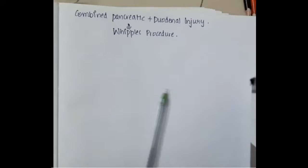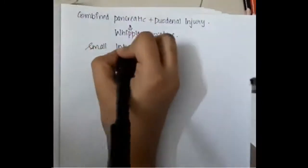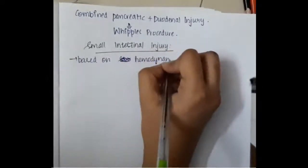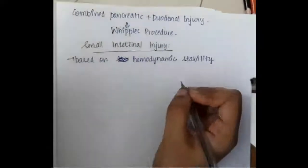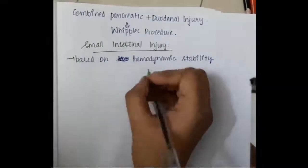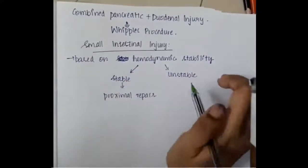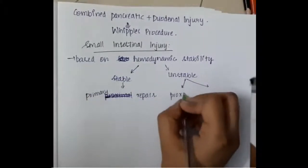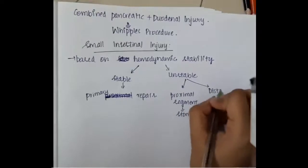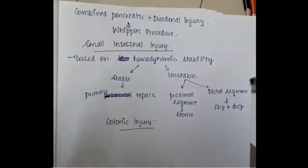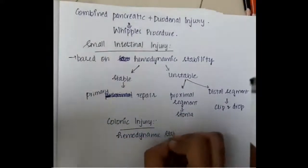For small intestinal injury, management is also based on hemodynamic stability. If the patient is hemodynamically stable, primary repair can be done. If the patient is hemodynamically unstable and the injury is in the proximal segment, we should put a stoma. If it is the distal segment, the clip and drop method is used.